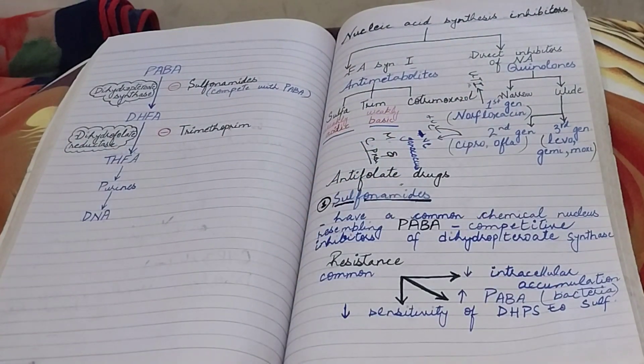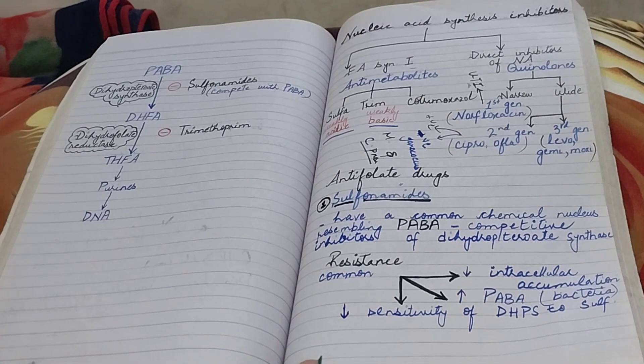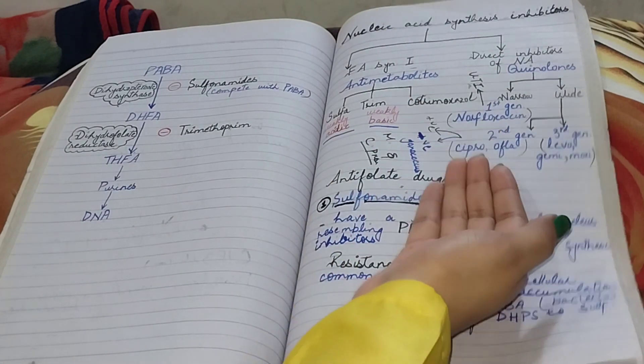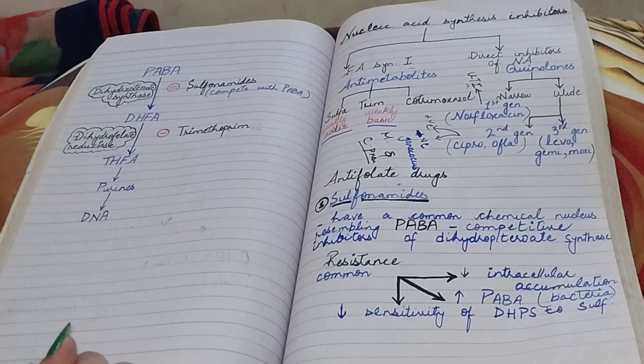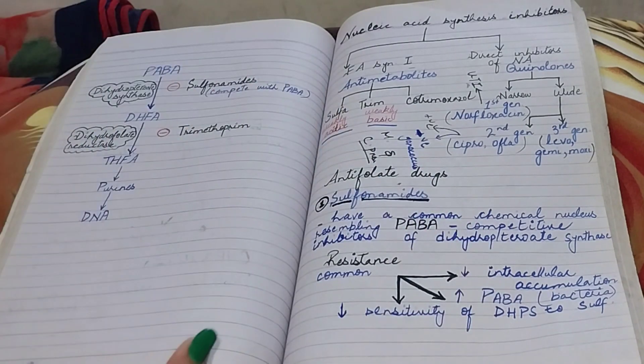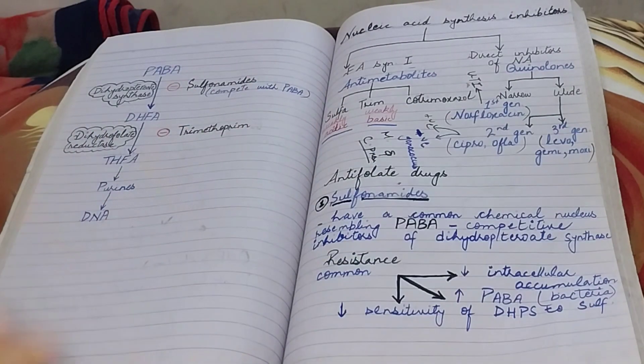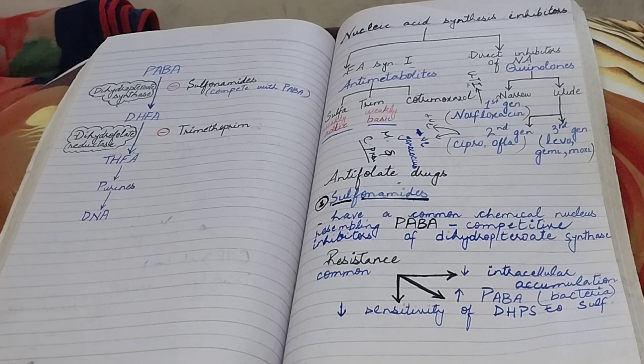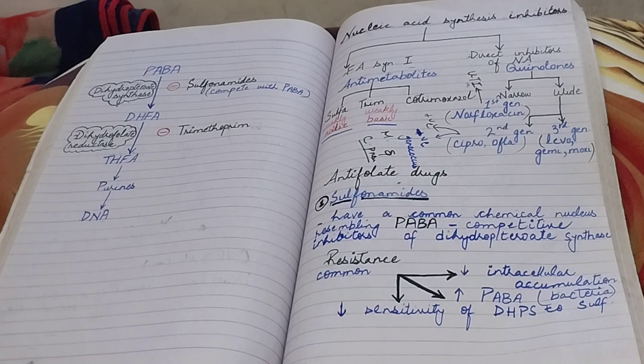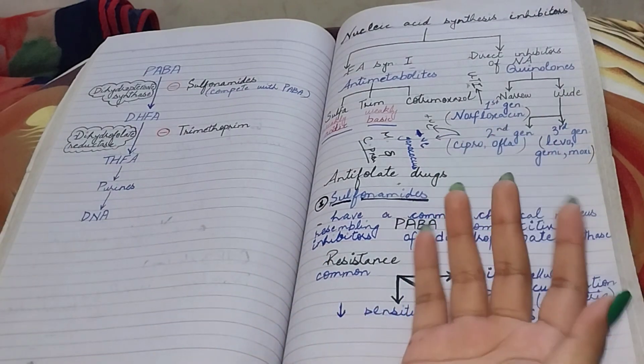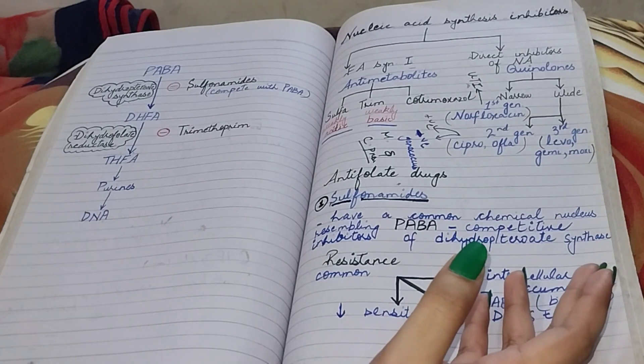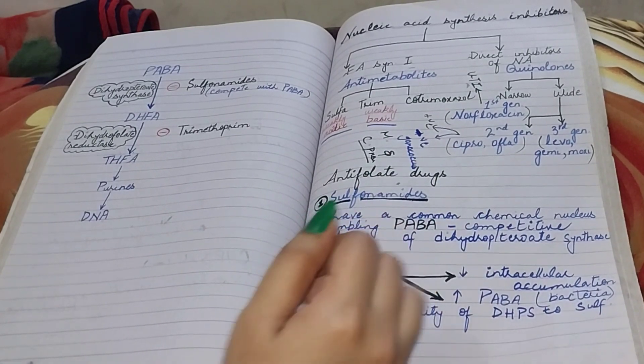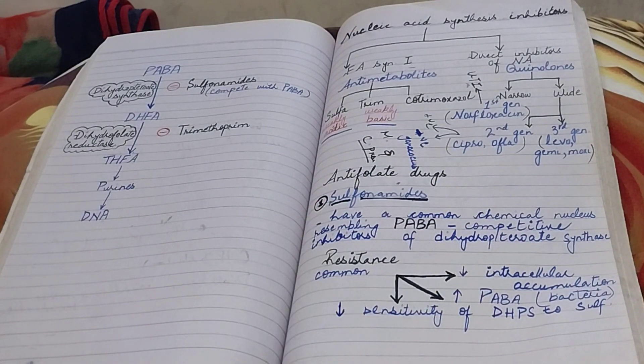In other words we can say that for gram negative bacteria second generation is preferred, and for gram positive bacteria, gram positive cocci, third generation is preferred. Third generation is active against Strep pneumonia. They are very active against gram positive cocci including Strep pneumonia, some strains of enterococci, and MRSA. Third generation drugs are commonly referred as respiratory fluoroquinolones.